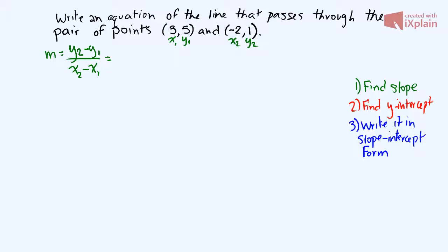Okay, so let's plug in our information. We have y sub 2, which is 1, minus our y sub 1, which is 5, divided by our x sub 2, which is negative 2, minus 3. So we say 1 minus 5 is negative 4, and negative 2 minus 3 is negative 5, and we know that a negative divided by a negative is a positive.